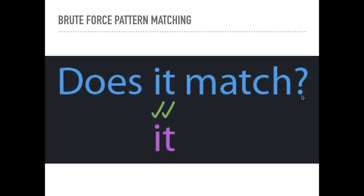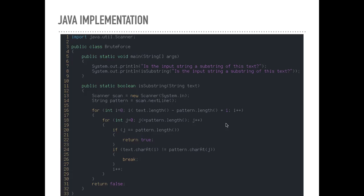We're going to iterate through all of the text characters except for the last pattern length plus one. For example, if we have the pattern IT — I is under H, T is under a character — if that doesn't work, we don't have to put I under the next character because there's nothing for T to go under, so we know it's not going to match. If our word was MATCH and it started near the end, it wouldn't make any sense. So we only iterate that far along the text. Then we have a nested loop where we iterate through the pattern.